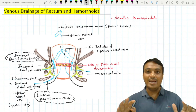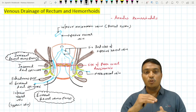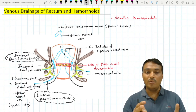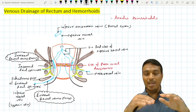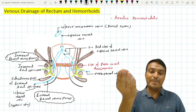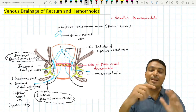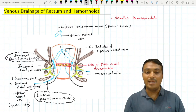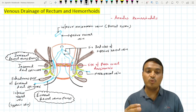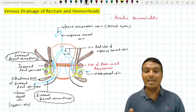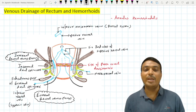To summarize the venous drainage of the rectum: the superior rectal vein drains blood from the rectum and the anal canal above the pectinate line into the inferior mesenteric vein and ultimately into the portal system, while the area below the pectinate line drains via the middle rectal vein and inferior rectal vein into the systemic circulation.